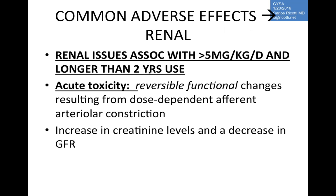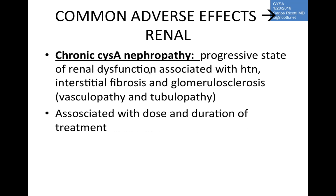Because acute renal toxicity is reversible, you can lower the dosage rather than stopping outright. If creatinine is maintained or improved and GFR improves, the acute toxicity will reverse. Chronic nephropathy from cyclosporine is progressive and involves interstitial fibrosis, glomerulosclerosis, vasculopathy, and tubulopathy — associated with both dose and duration of treatment.